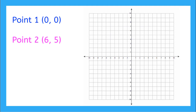Now I have two sets of ordered pairs that have different x-coordinates and different y-coordinates. So what's the distance between these two points? Let's plot them to start. Point 1 is at (0, 0), which we know is the origin, so we can put it right there. Now point 2 is at (6, 5), so we go over to 6 on the x-axis and up to 5. And that's point 2 at (6, 5).